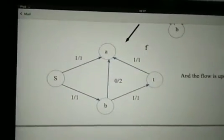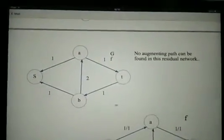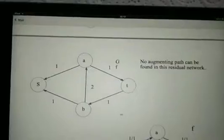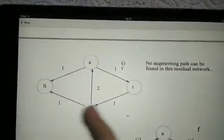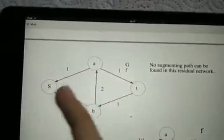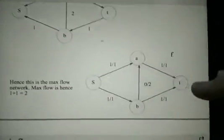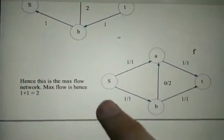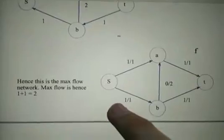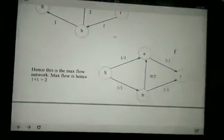From here, you would again find a residual network. However, no augmenting path can now be found in this residual network, as the arrows are both facing this way, so there's no more augmenting path to be found. Hence, the max flow is given by this flow network, and the max flow is the sum of all the flows leaving the source. So here is 1 plus 1, which equals 2.